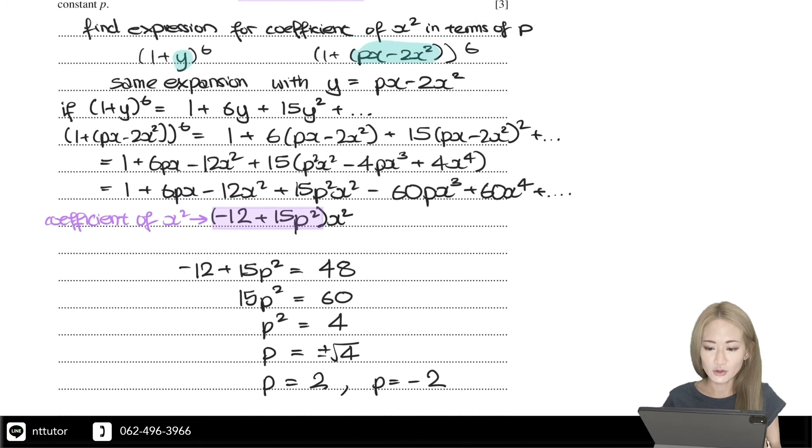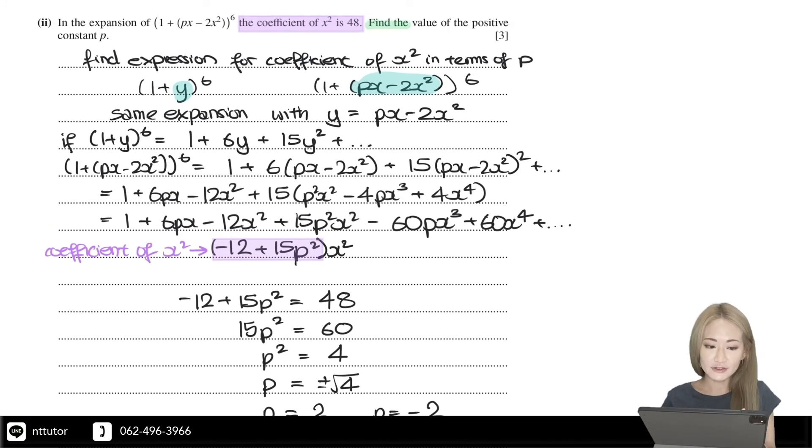However, the question says find the value of the positive constant p, so it needs to be positive. Therefore, the answer is p = 2, not p = -2.